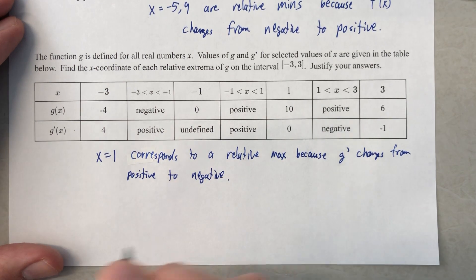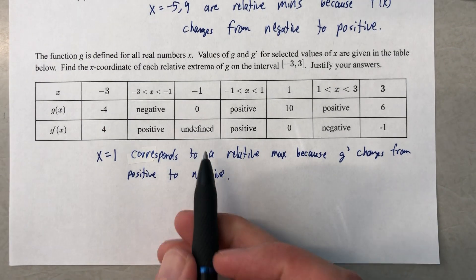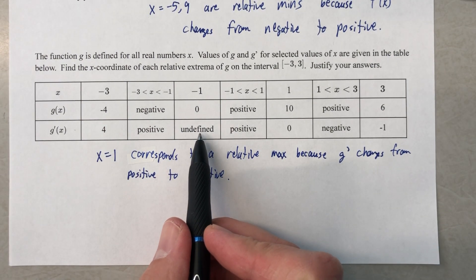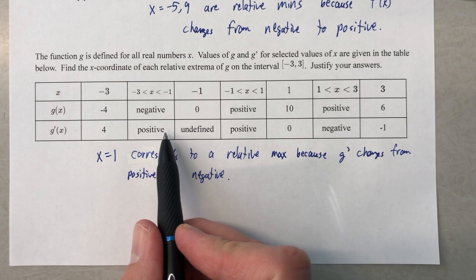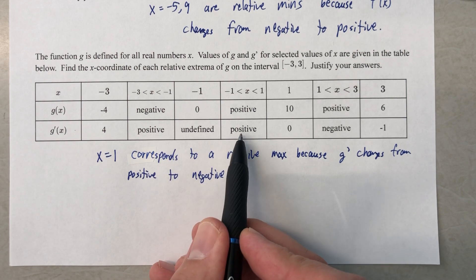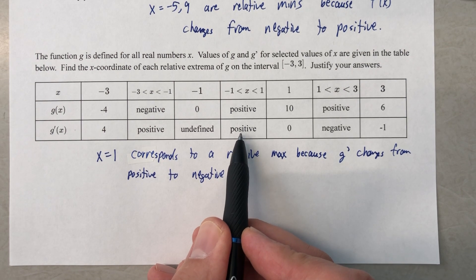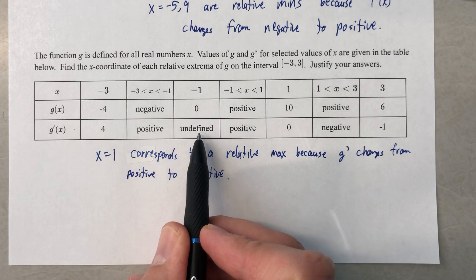We also need to think of where the derivative doesn't exist. There's one. At this point, we transition from a function that is increasing to a function that is increasing. Nothing changed, so we are not going to have a maximum or a minimum at x equals negative one.